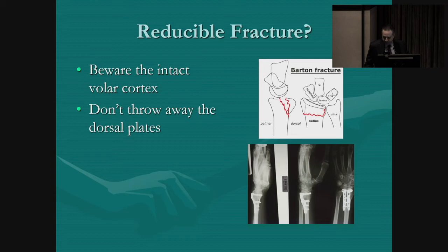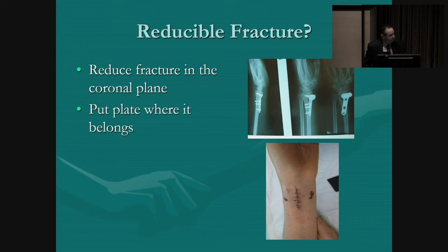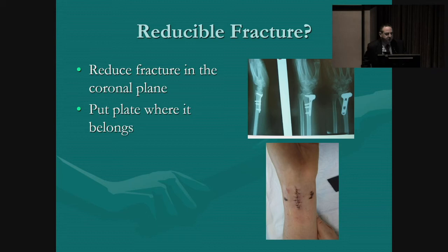The next question is: is the fracture reducible in the coronal plane? It's good to be able to reduce it on the lateral projection, but you have to make sure the fracture is reduced in the coronal plane if you want the plate to fit properly. You also have to make sure you put the plate in good location, because if you don't, it sticks off the radial side of the distal radius and the patient will have irritation postoperatively. That can be hard to do through a small incision.